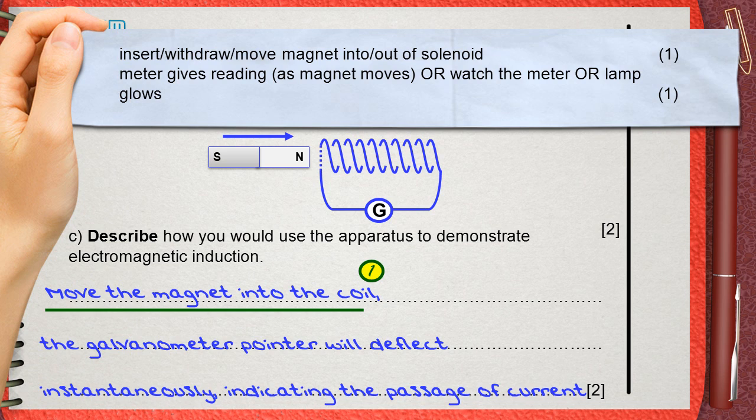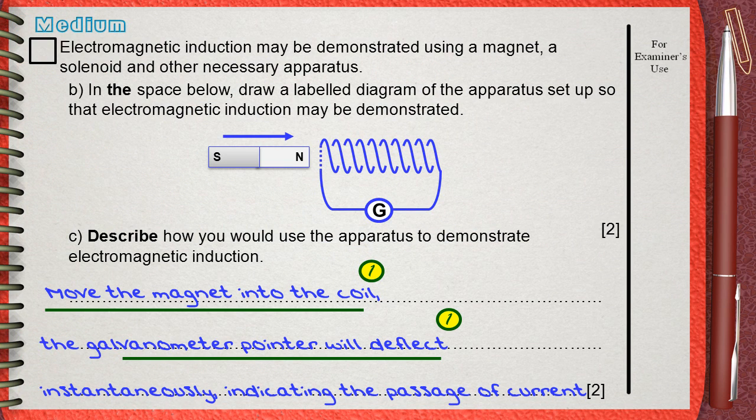We mentioned the movement of the magnet, and we mentioned our observation that the galvanometer pointer will deflect. These are the two marks of the question.